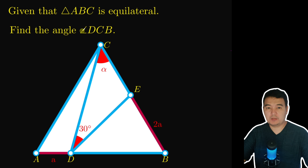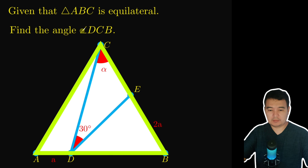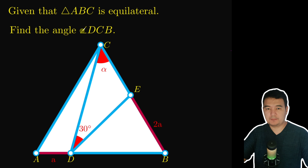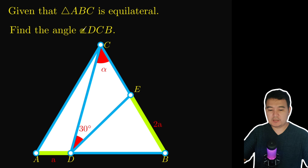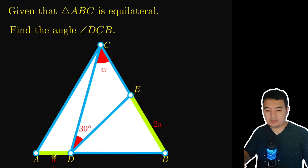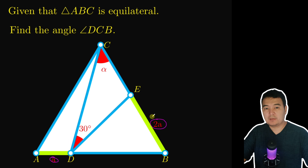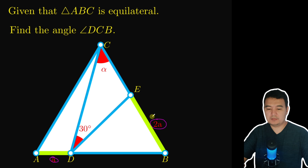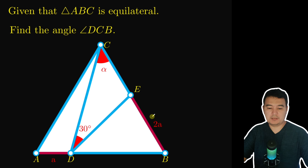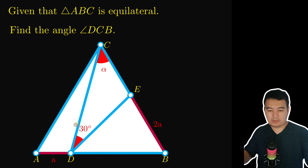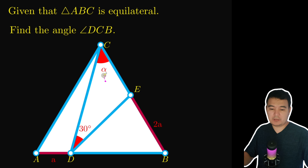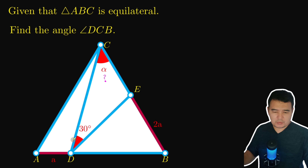In this problem we are given an equilateral triangle ABC. The relation between two segments is that EB is twice AD. We also have two angles of 30 degrees, and we need to find the value of angle alpha.